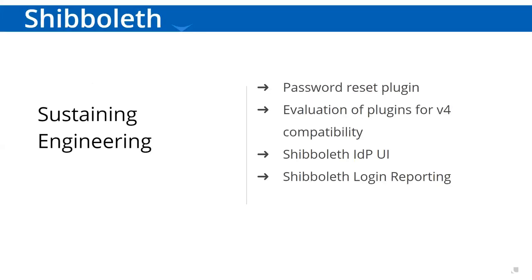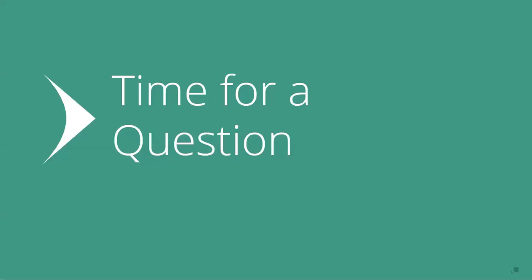Here's an overview of items that Unicom has been working on utilizing the open source sustained engineering program. Development work has been done on the password reset plug-in — it is currently a work in progress. There has also been an effort to evaluate and update Unicom-maintained plug-ins such as Redis Storage Service and ShibCas Authenticator to be compatible with Shibboleth IDP version 4. We've also been doing improvements to the Shibboleth IDP UI application documentation, and we've started implementing web UI reporting to help visualize Shibboleth IDP audit logs — also a work in progress. That's all I have today regarding the Shibboleth update. Thank you very much.